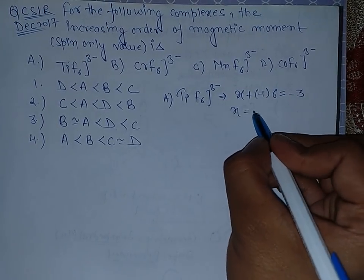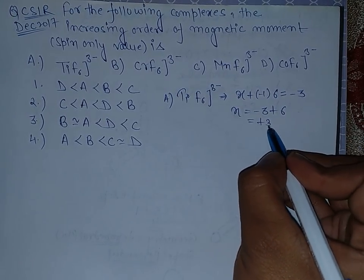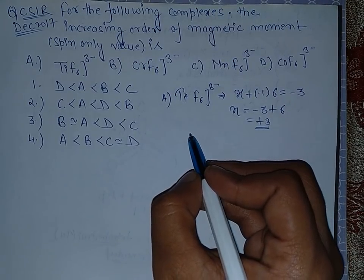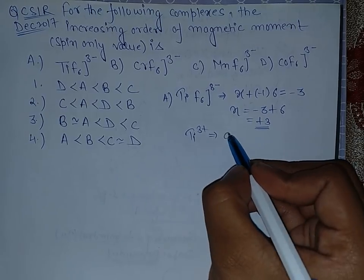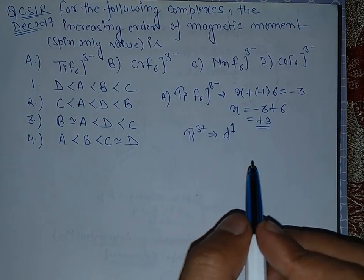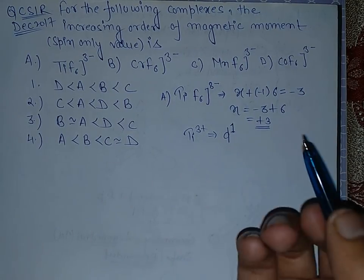So X equals minus 3 plus 6, which is plus 3 oxidation state. In plus 3 oxidation state, titanium has D1 configuration. So the number of unpaired electrons is obviously 1.